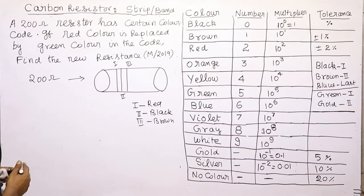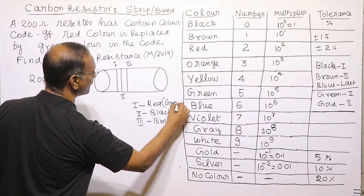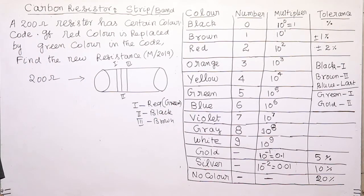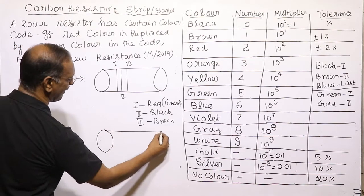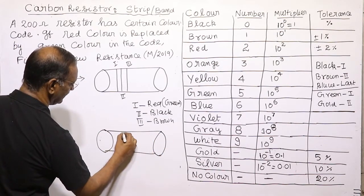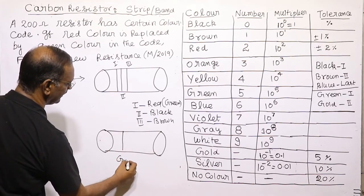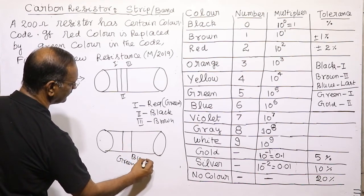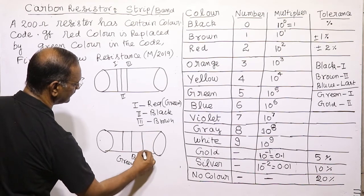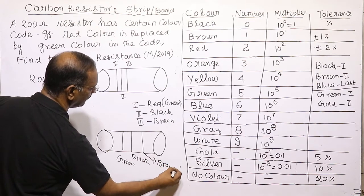Now, if the red color of the first band is replaced by green, we analyze the new resistance. The second band remains red as before, and the third band remains brown — it is not replaced. So only the first band changes from red to green.